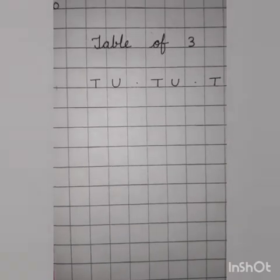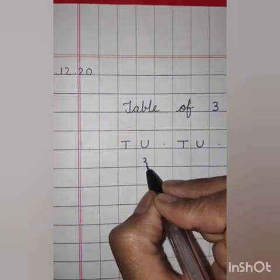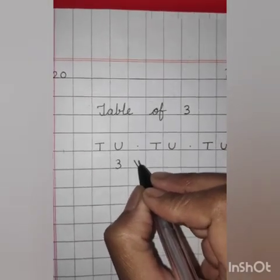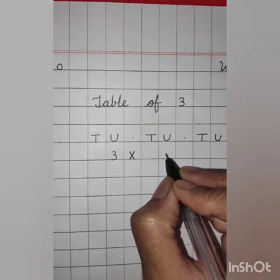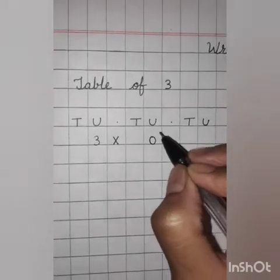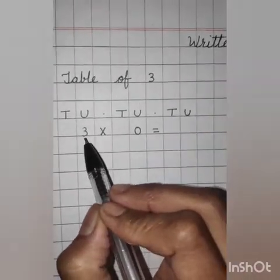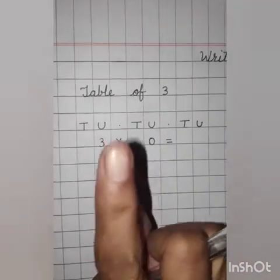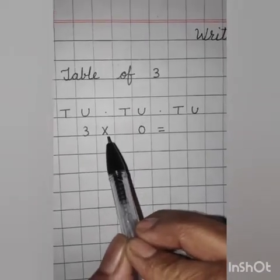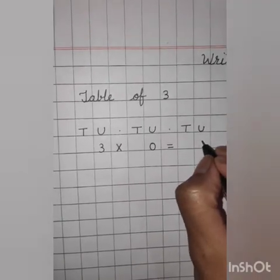Now, three. Multiply. First, zero. And then, is equal to. Like this. Three, three. Three. One digit hai. Is liye, U ke niche likh hai. Three multiply zero. Three threes zeroes are? Yes. Zero.